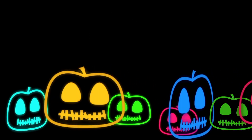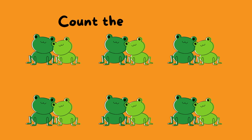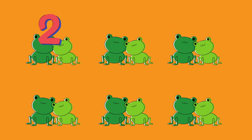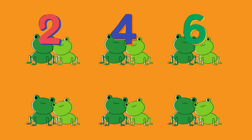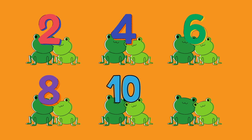Let's keep practicing. Count the number of frogs by two. Start with two, four, six, eight, ten, and twelve. There are twelve frogs. Well done.